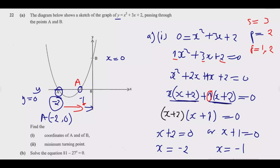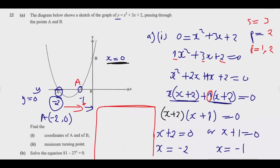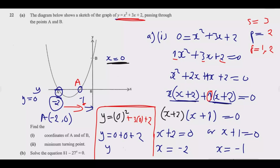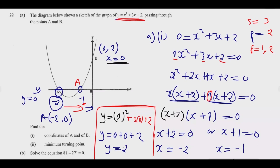Point B is quicker. At B, the value of x = 0, so we substitute x = 0 into the equation: y = (0)² + 3(0) + 2 = 0 + 0 + 2 = 2. Therefore y = 2, and the coordinate of B is (0, 2). Write that in and you earn those two marks. Now we move to the minimum turning point.